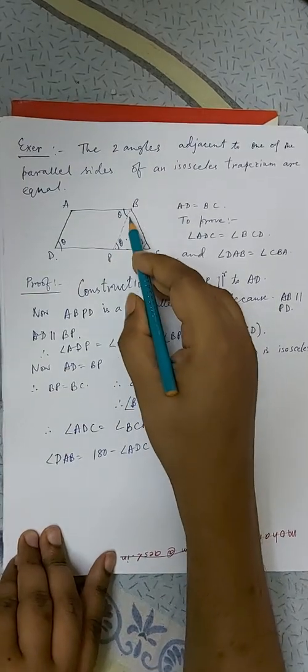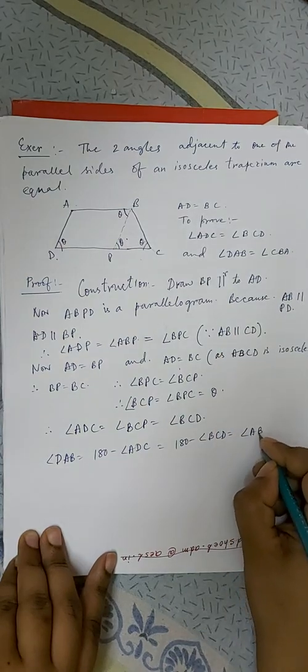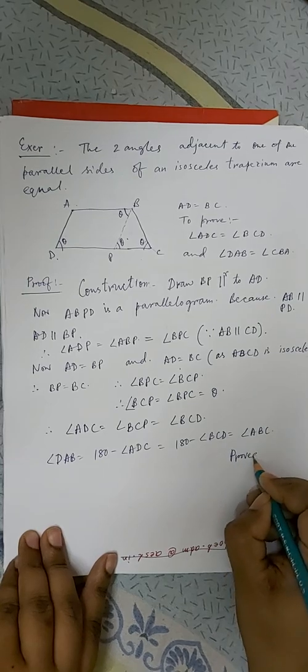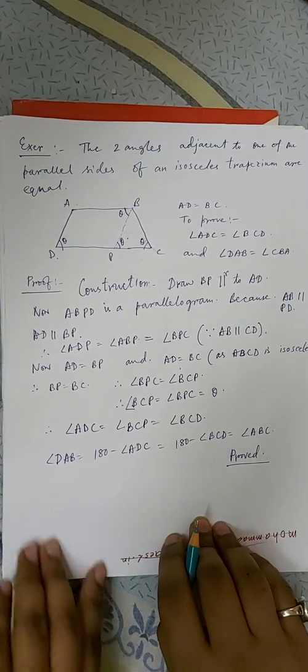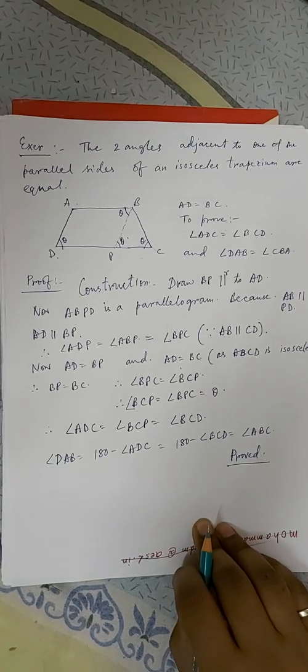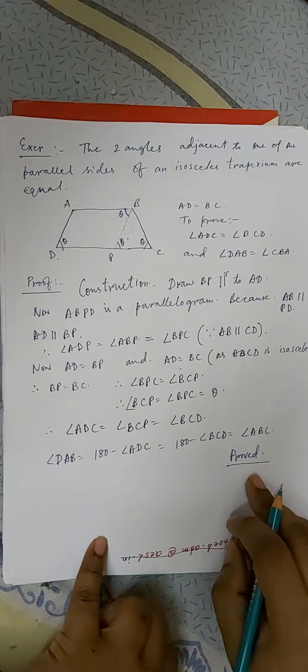Now 180 minus BCD is ABC. See the proof once, pause it and see the proof once.